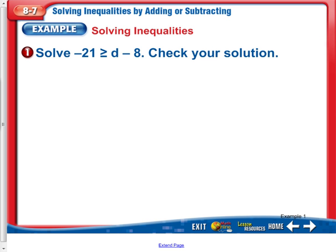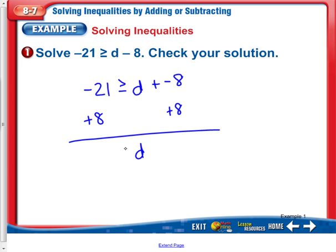For the first thing, we will copy the inequality. -21 is greater than or equal to d plus negative 8. Notice I'm changing the subtraction to addition. To get rid of the negative 8, we will add 8 to both sides. I'm left with d over here. The symbol does not change. It comes down the exact same way.